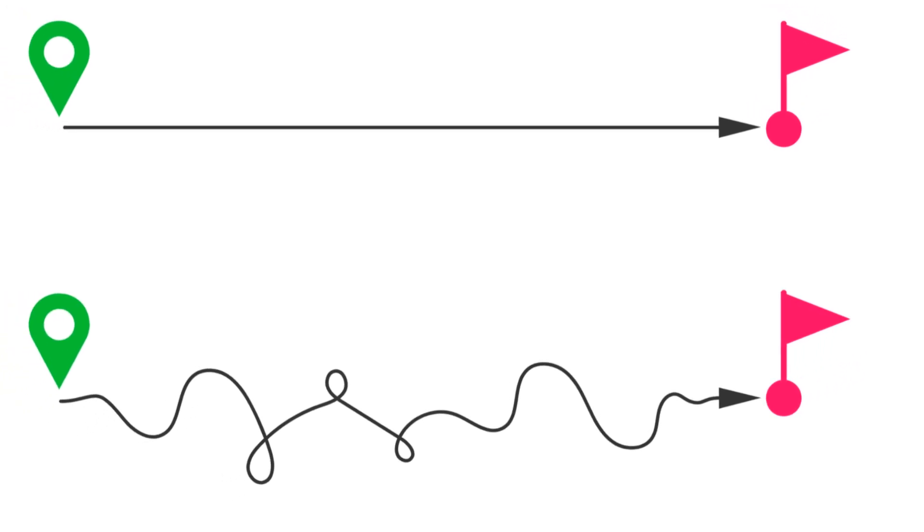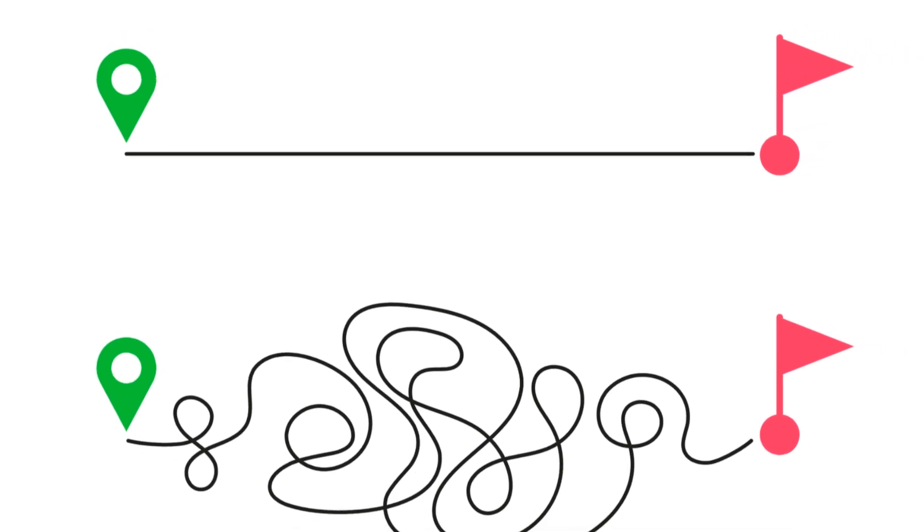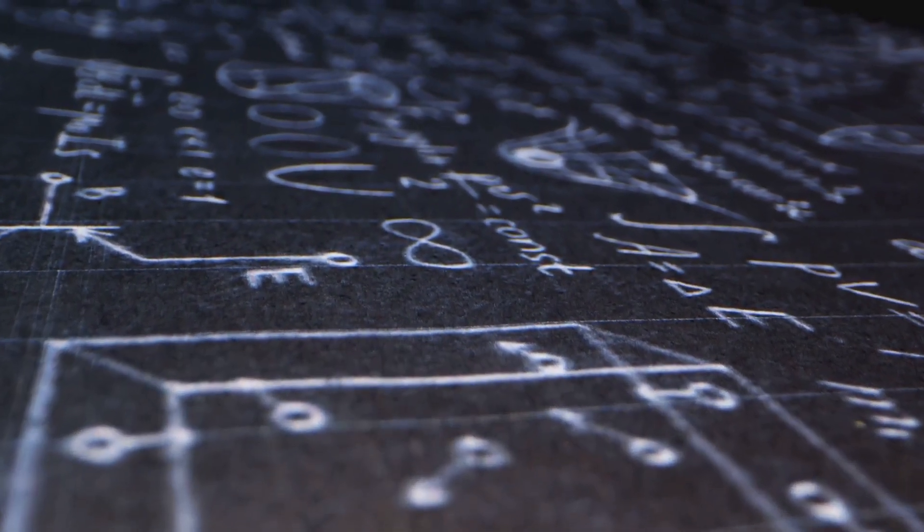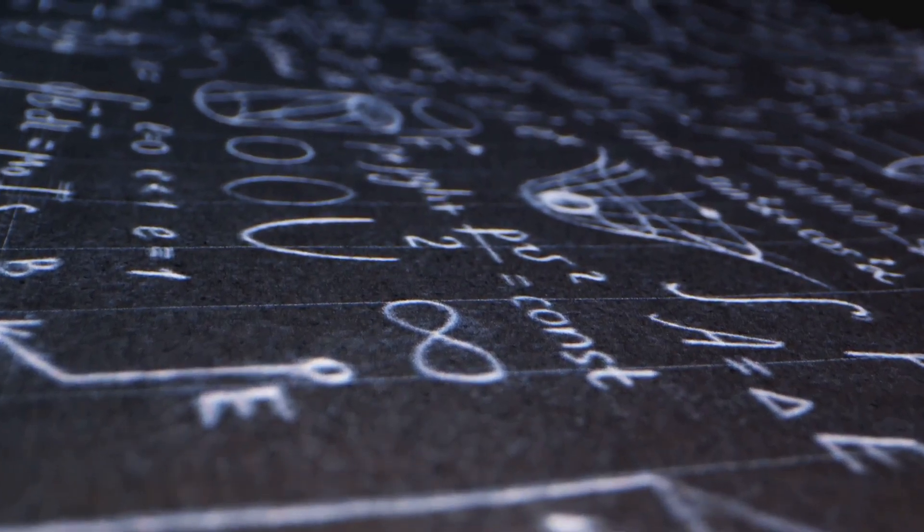The catch? The path couldn't be a straight line, adding a layer of complexity that would stump many. This problem, known as the Brachistochrone problem, stumped mathematicians for months, leaving many scratching their heads in frustration.